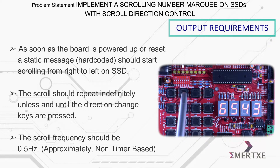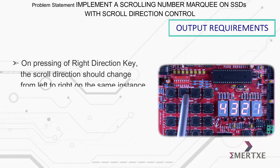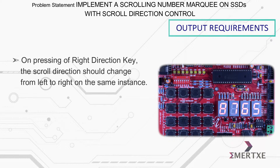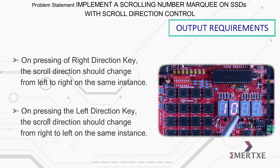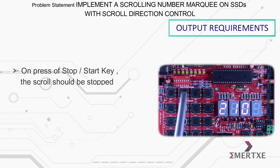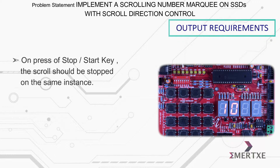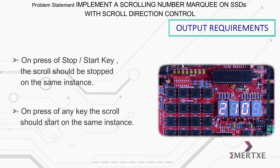The scroll frequency should be 0.5 Hz. On pressing a right direction key, the scroll direction should change from left to right on the same instance. On pressing the left direction key, the scroll direction should change from right to left on the same instance. On pressing the stop or start key, the scroll should be stopped on the same instance. On press of any key, the scroll should start on the same instance.